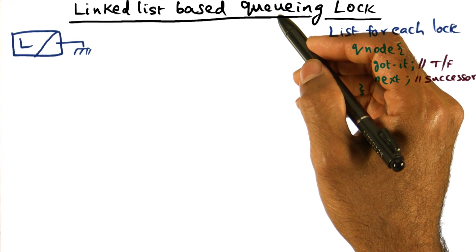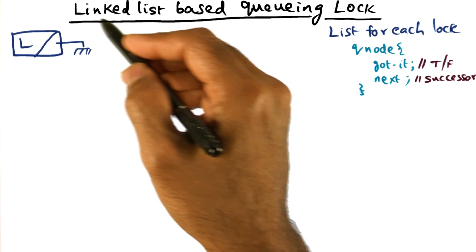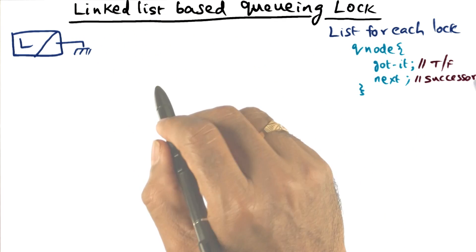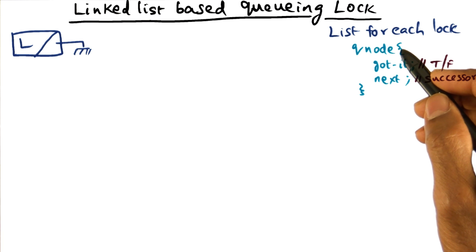To avoid the space complexity in Anderson's array-based queuing lock, we're going to use a linked list representation for the queue. The size of the queue is going to be exactly equal to the dynamic sharing of the lock.